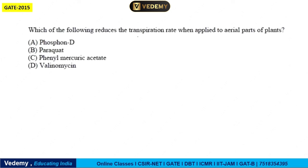Next question: which of the following reduces the transpiration rate when applied to the aerial part of the plant? Options are Phosphon D, Paraquat, Phenyl Mercuric Acetate, and Valinomycin. The answer relates to anti-transpiration factors discussed in the transpiration portion — a list was provided including wax and certain chemicals that, when applied, significantly lower transpiration rate. The answer is Phenyl Mercuric Acetate (option C).